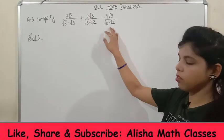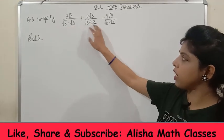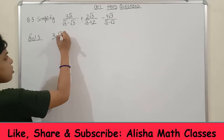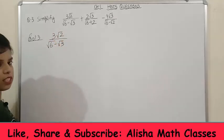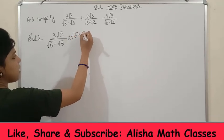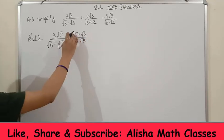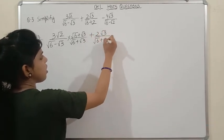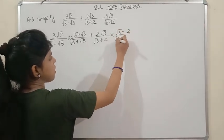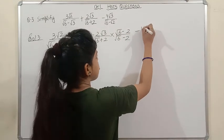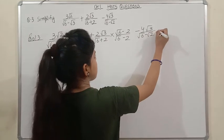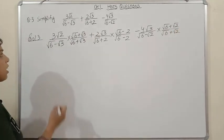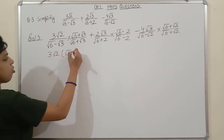Question 3: Simplify an expression where each term has an irrational denominator. As we discussed, when the denominator contains an irrational term, we rationalize it by changing the sign in the middle. So if the denominator has a minus, we multiply and divide by the expression with plus, and vice versa. We will rationalize each term individually.